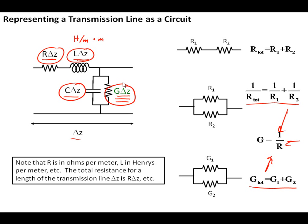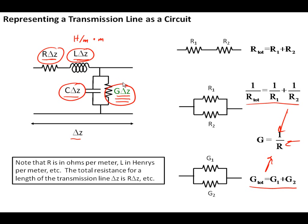R is in ohms per meter, L is in henrys per meter, and so on. If you want to know the total resistance or inductance of a length of wire, you multiply the resistance per meter by the number of meters to get that.